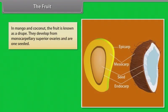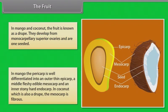In mango and coconut, the fruit is known as a drupe. They develop from monocarpellary superior ovaries and are one-seeded. In mango, the pericarp is well differentiated into an outer thin epicarp, a middle fleshy edible mesocarp, and an inner stony hard endocarp. In coconut, which is also a drupe, the mesocarp is fibrous.